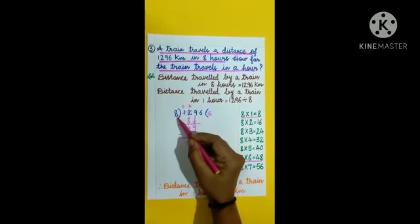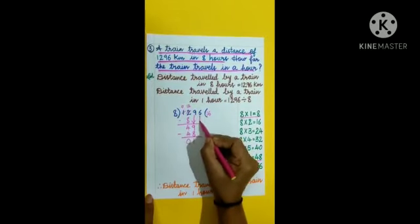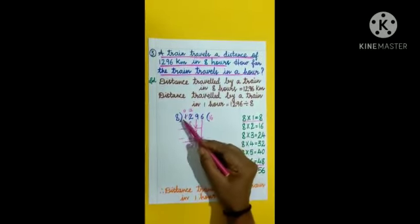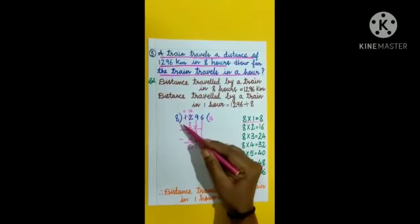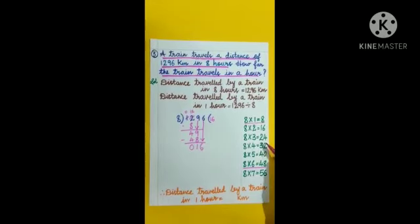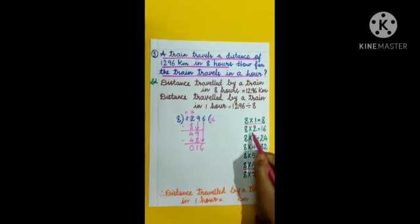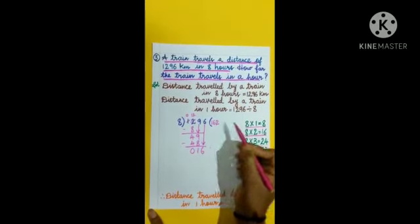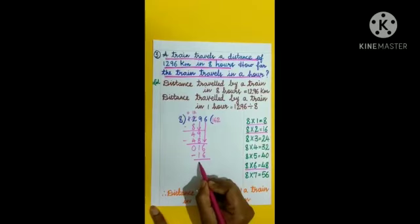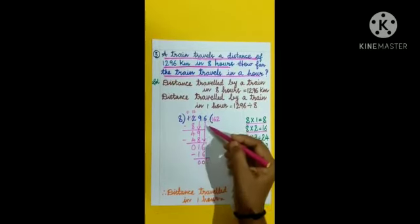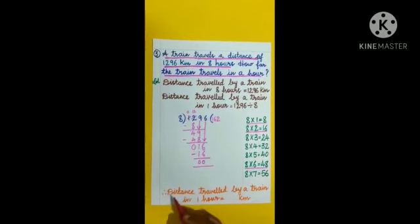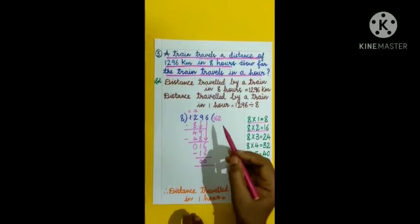So we consider the next ones place digit, 6. Now the number is 16. Compare 16 with divisor 8: 16 is greater than 8. From the table of 8, we know 8 twos are 16. We write 2 in the quotient, write 16 under 16, and subtract: 16 minus 16 equals 0. As there are no more digits to bring down, the division is completed. Therefore, the distance travelled by the train in 1 hour is equal to 162 km.